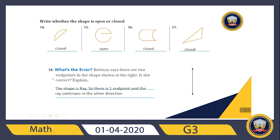Question 18: what's the error? Brittany says there are two end points in the shape shown. Is she correct? No — the shape is a ray. There is one end point, and the ray continues in the other direction.